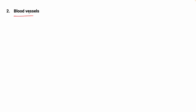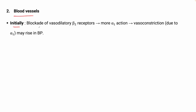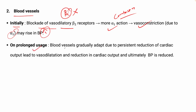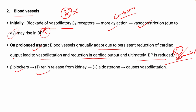Regarding the actions on blood vessels: initially beta blockers will block the vasodilatory beta-2 receptors, leaving more unopposed alpha-1 action, which causes vasoconstriction and an initial increase in BP. However, on prolonged use, the body gradually adapts to the persistent reduction in cardiac output, leading to vasodilation and an ultimate reduction and normalization of BP. Beta blockers also decrease renin release from the kidney, decreasing aldosterone and ultimately contributing to vasodilation.